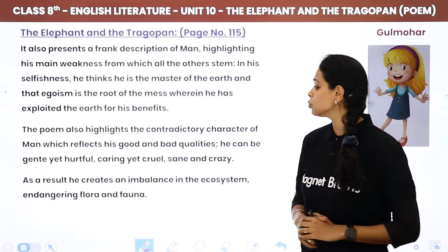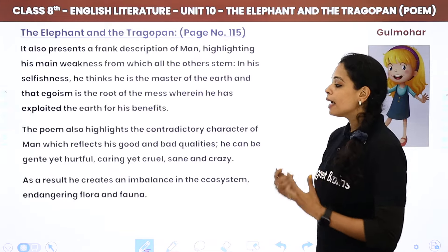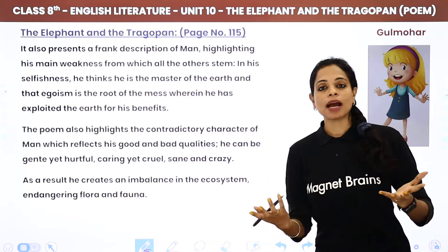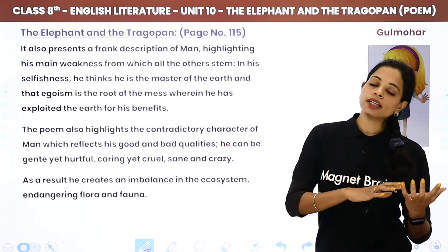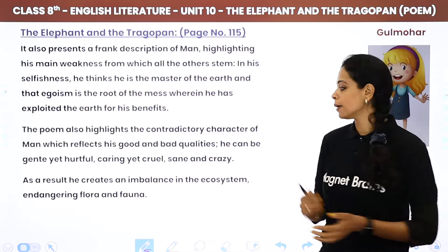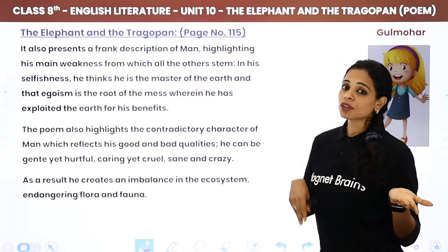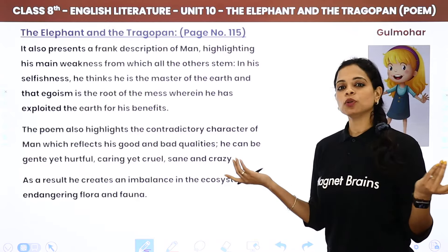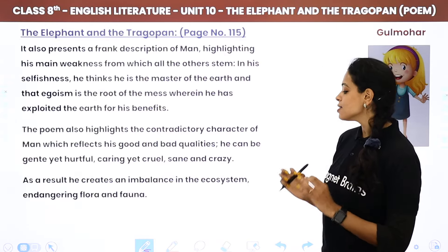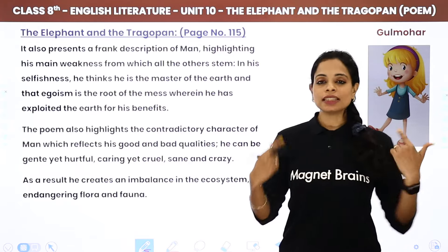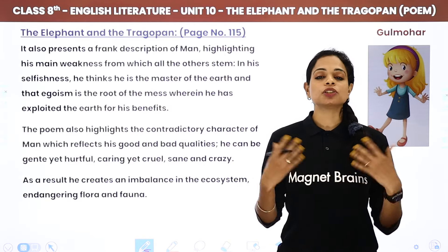The poem also highlights the contradictory character of man, which reflects his good and bad qualities. Man can be gentle yet hurtful, caring yet cruel, sane yet crazy. He is loyal, caring, loving, but also brutal and vicious. As a result, he creates an imbalance in the ecosystem, endangering flora and fauna — because he is destroying them due to his contradictory and irresponsible nature.